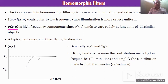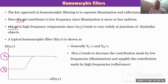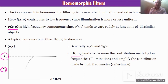This low frequency part is the illuminance part and the high frequency part is the reflection part. Generally, γ_L is less than 1 and γ_H is greater than 1. The filter h(u,v) tends to decrease the contribution made by the low frequency and amplify the contribution made by the high frequency. The homomorphic filter reduces the low frequency and enhances the high frequency, making the image clearer.